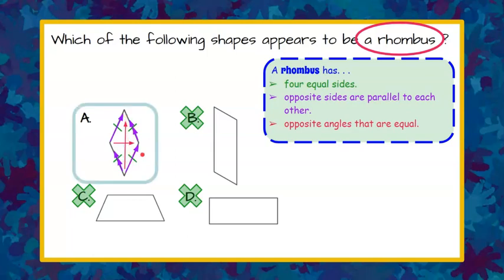So I'm going to say choice A checks out with all three properties that are required to define it as a rhombus.